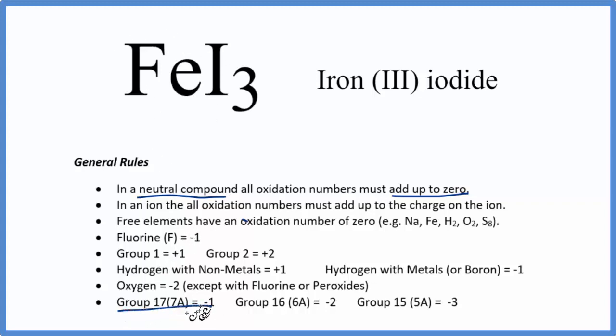Here we have group 17, sometimes called 7A. That's minus 1. Iodine is in group 17. So we know that iodine, each atom, is going to be minus 1.